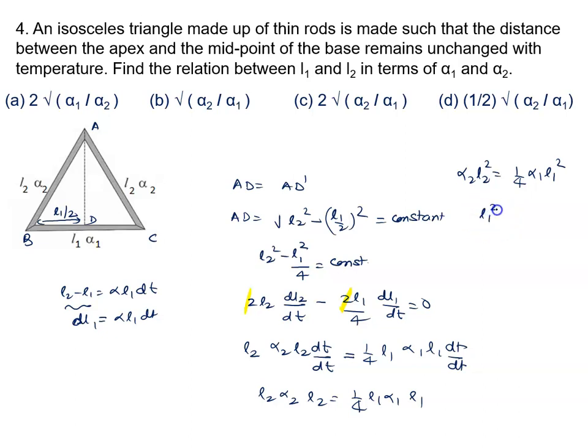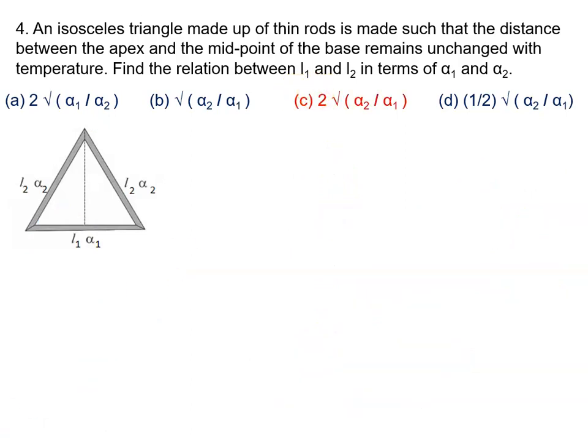So L1 square upon L2 square is given by 4 alpha 2 upon alpha 1. Therefore, L1 by L2 is written as 2 root alpha 2 upon alpha 1. So the right answer to this problem is option C, that is 2 root alpha 2 upon alpha 1.